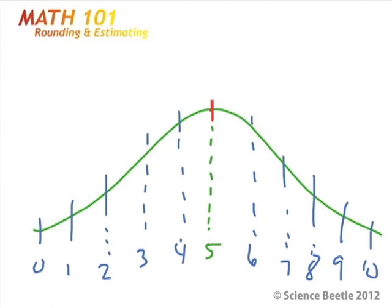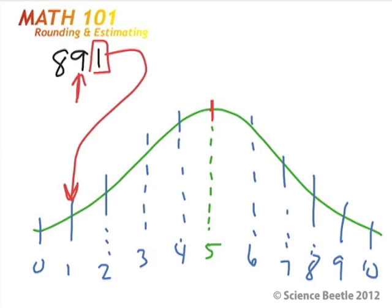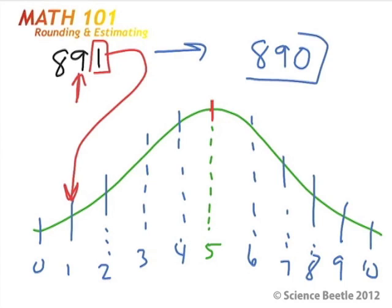What if I have a number like 891 and I ask you to estimate or round it to the nearest tens place? The digit in the tens place is 9. In order to round, I need to look at the number immediately to its right, which is 1. Where does 1 fall on the scale — is it greater than, less than, or equal to 5? The 1 falls on the left-hand side, so I reduce it to 0. The number becomes 890. Because 1 does not meet the threshold of being greater than or equal to 5, the ones digit gets reduced to 0 and the number goes to 890.